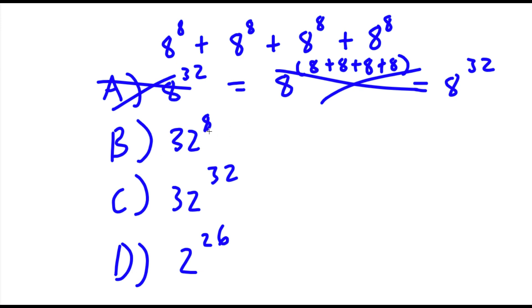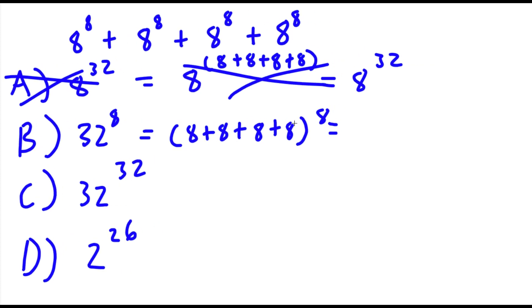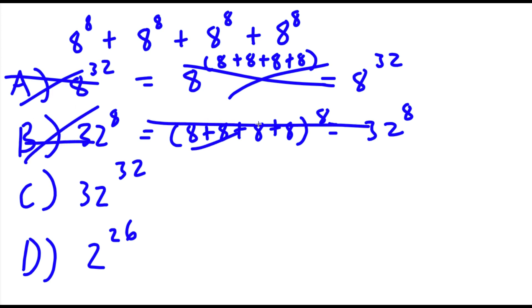For answer choice B, they got 32 to the power of 8. How they got this was they kept the exponents the same and they added the bases. So they did 8 plus 8 plus 8 plus 8 to the power of 8. Now 8 times 4 is 32, so they got 32 to the power of 8. And this method is actually wrong as well. This is not the right way to add exponents.